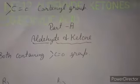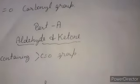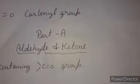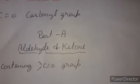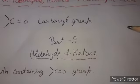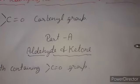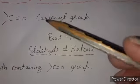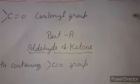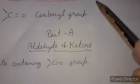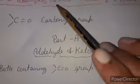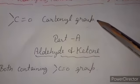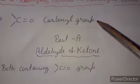In unit 11 we learned two classes of organic compounds — alcohols and ethers — along with phenol, which contain a carbon-oxygen single bond. But in this chapter we will discuss functional groups which contain a carbon-oxygen double bond, known as the carbonyl group.